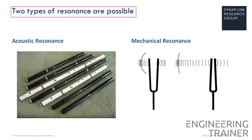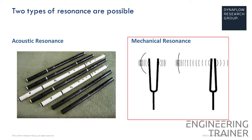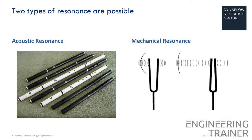Two types of resonance are possible in the context of pulsations. The first is acoustic resonance, which is the amplification of pressure variations in pipes and influences the magnitude of the pressure pulsations themselves. Secondly, there is mechanical resonance, which influences the magnitude of the vibrations, so the displacements of the object. We need to take into account both acoustic and mechanical resonance as they both impact potential vibrations in piping and the resulting fluctuating material stresses.